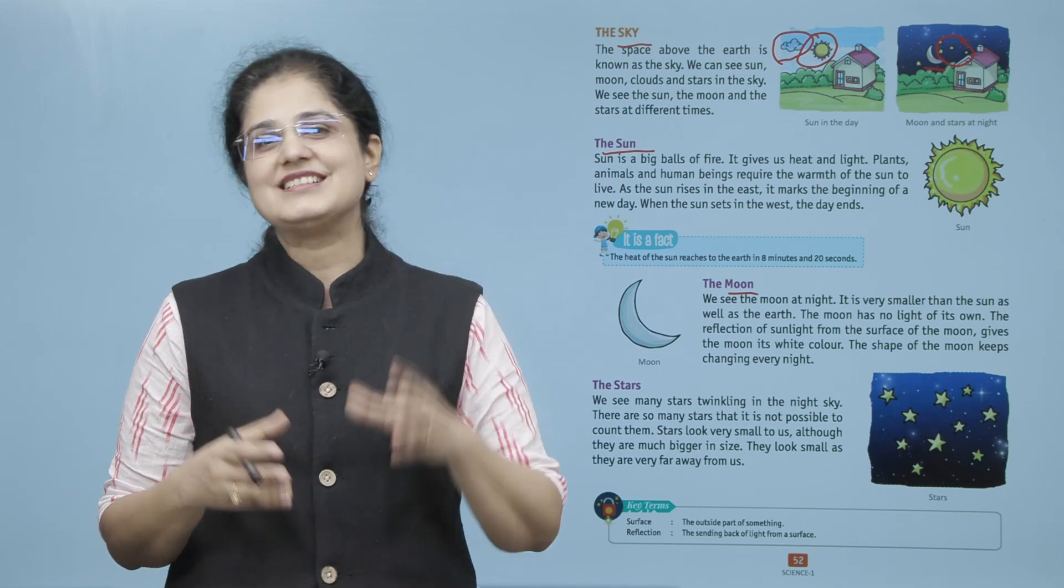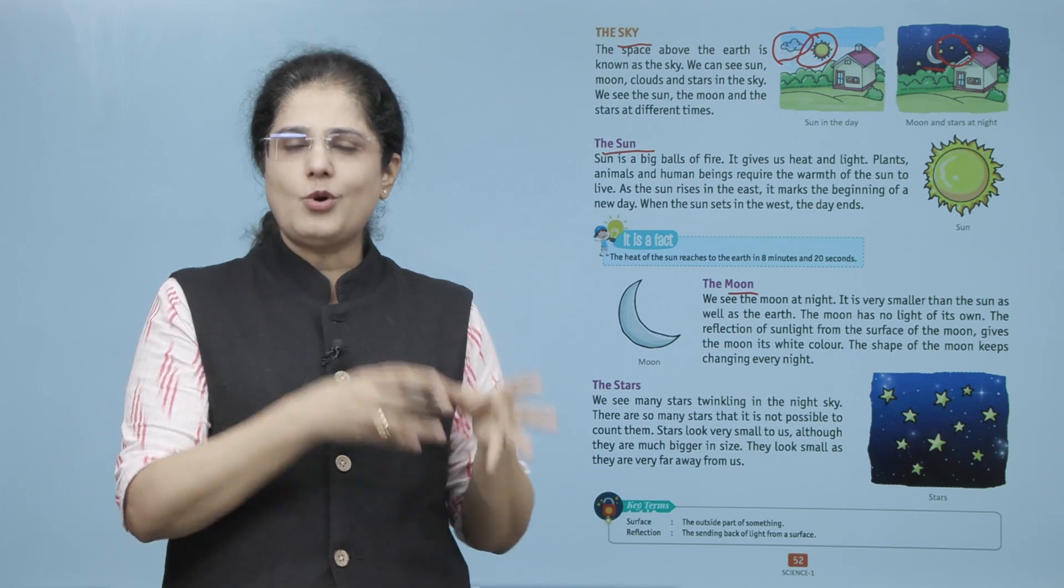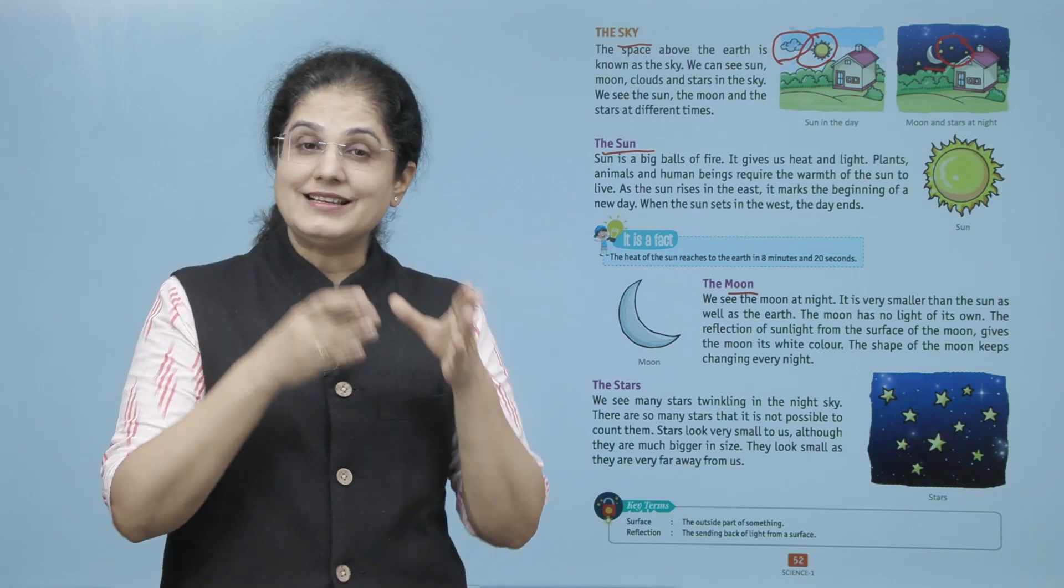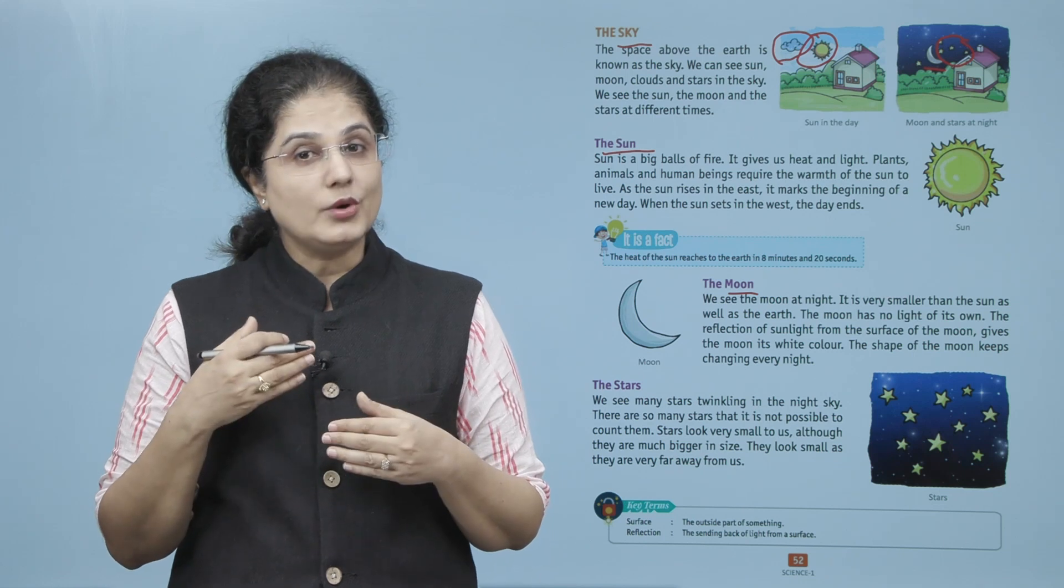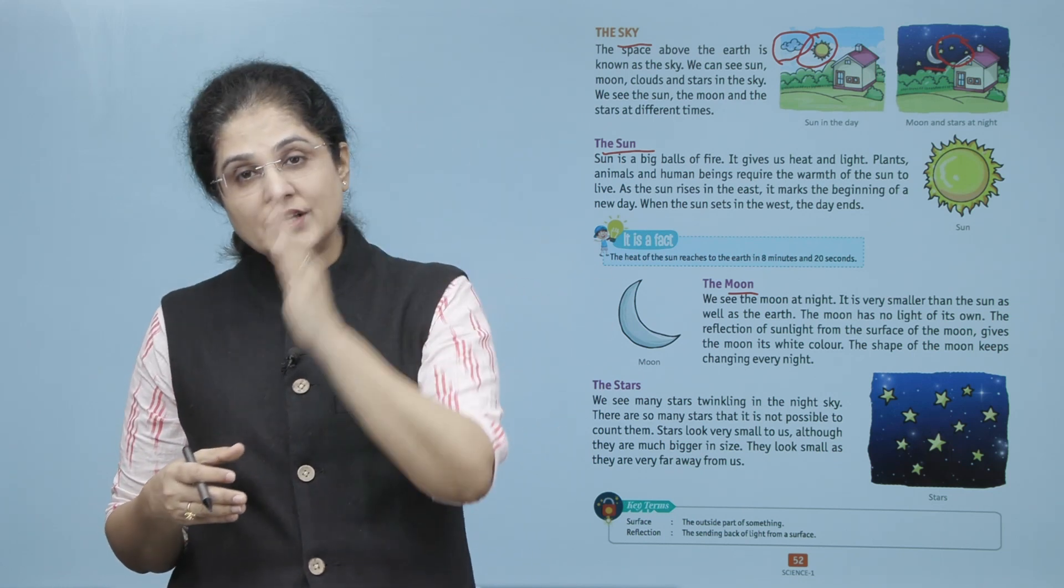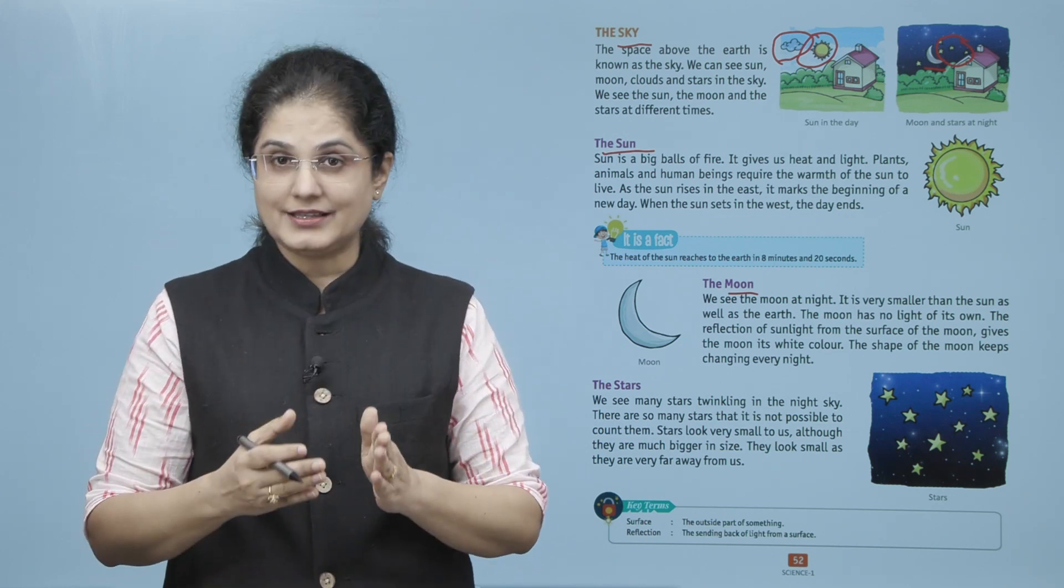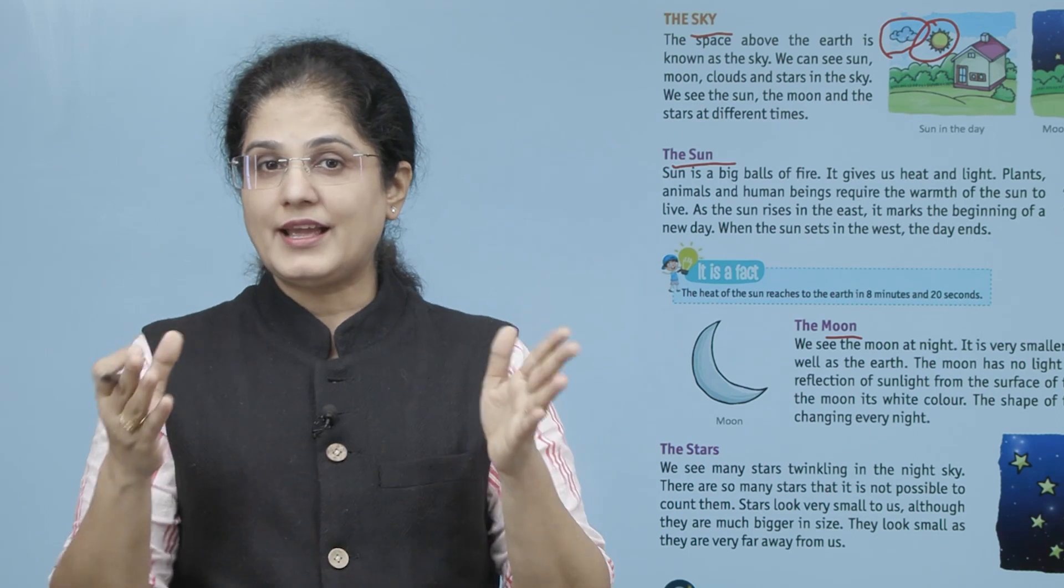To raat ko humein upar kya nazar aata hai? Chand yaani ki Moon. Ye Sun aur Earth dono se size mein chota hai. Moon ki apni koi bhi light nahi hai. Sun ki light Moon ke surface pe padti hai aur reflect hoke Earth pe nazar aati hai. Is wajah se jo Moon hai, chand hai,